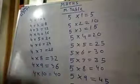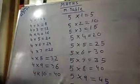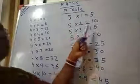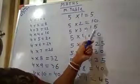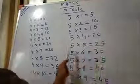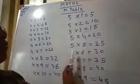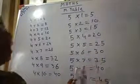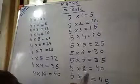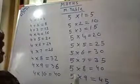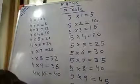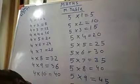Once more time. 5, 1's are 5. 5, 2's are 10. 5, 3's are 15. 5, 4's are 20. 5, 5's are 25. 5, 6's are 30. 5, 7's are 35. 5, 8's are 40. 5, 9's are 45. 5, 10's are 50.